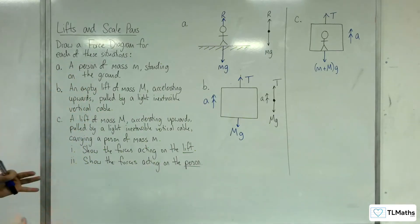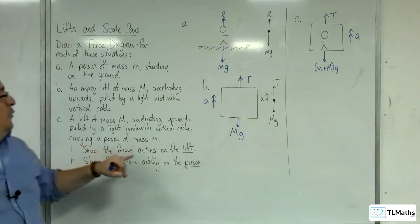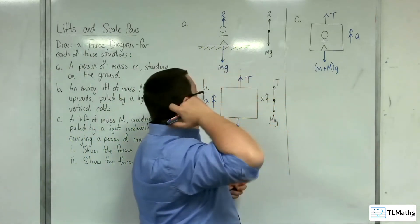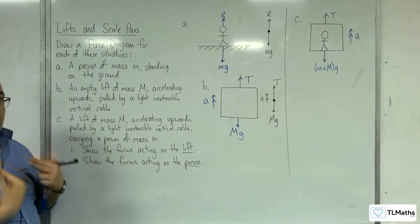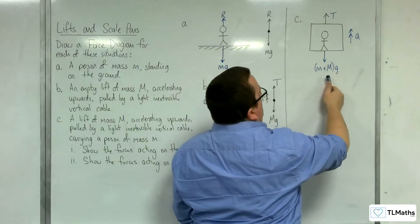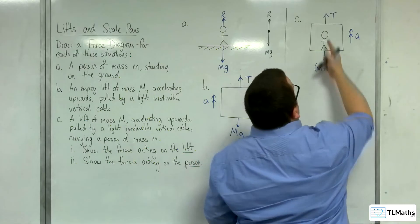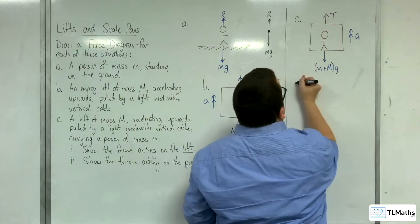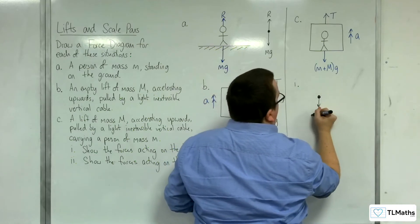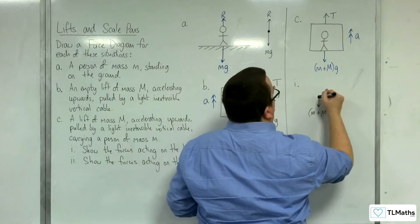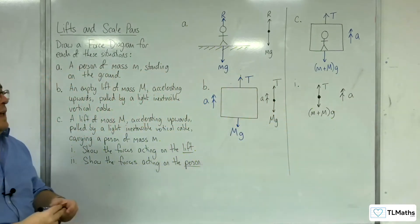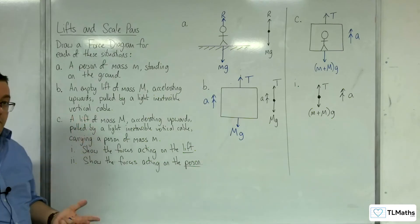This is the answer to part one — showing the forces acting on the lift. The lift is being pushed down by the weight of the person, which is why we have the combined weight of (m + M)g, and it's being pulled up by tension T, accelerating upwards. So for the lift particle: (m + M)g downwards, tension T upwards, and accelerating upwards.